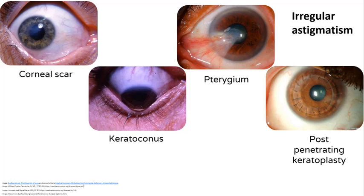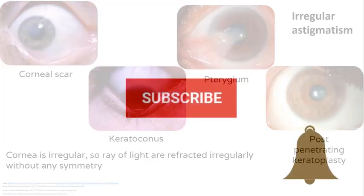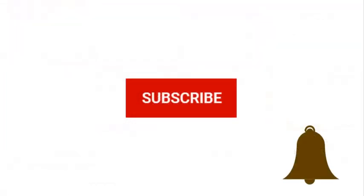A quick note on irregular astigmatism: the cornea is irregular, so rays of light are refracted irregularly without any symmetry. There are more than two principal meridians, each having a different place of focus. The common causes of irregular astigmatism are shown here.